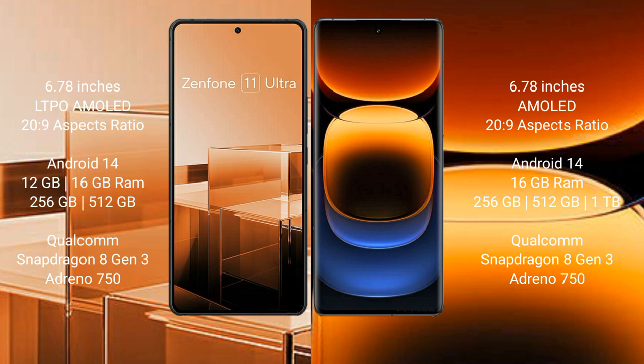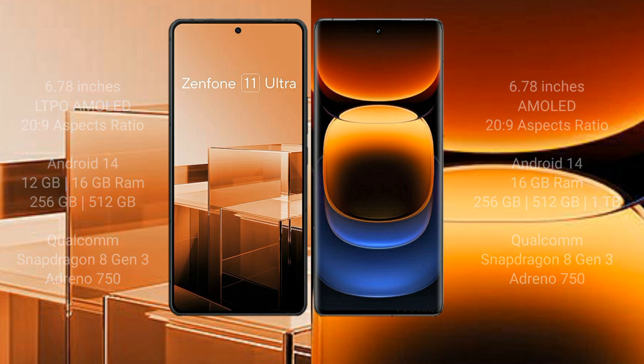The Asus Zenfone 11 Ultra comes with 8GB or 12GB or 16GB RAM and 256GB internal storage, powered by the Qualcomm Snapdragon 8 Gen 3 processor with Adreno 750 GPU. The Vivo IQ 12 Pro comes with 16GB RAM and 256GB or 512GB internal storage, also powered by the Qualcomm Snapdragon 8 Gen 3 processor with Adreno 750 GPU.